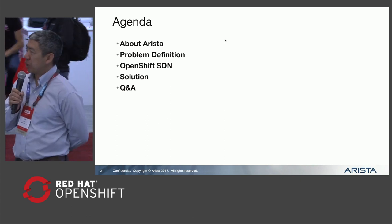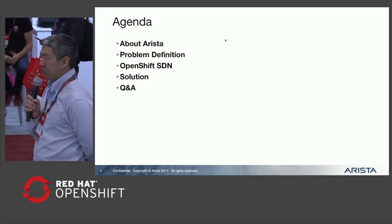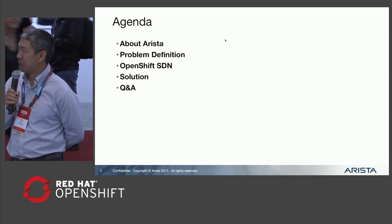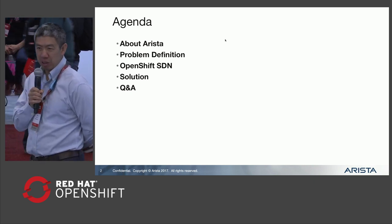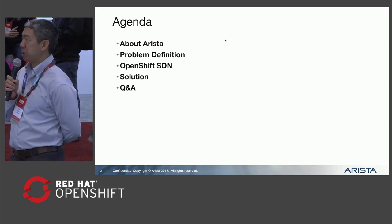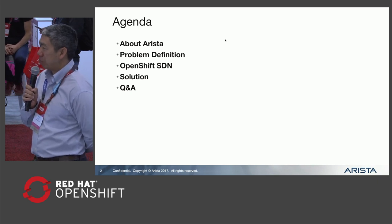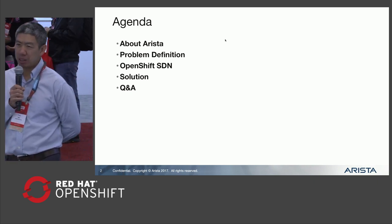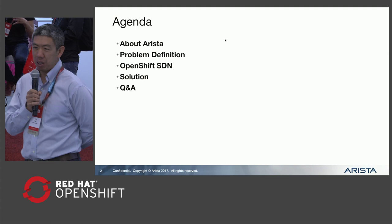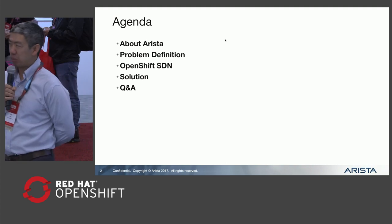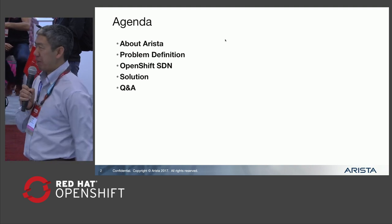So our agenda: we're just going to quickly go over Arista for those of you who may not be familiar with what Arista does. Then we'll go into the problem that we're trying to solve with OpenShift. We'll explain a little bit about what OpenShift SDN looks like, and then we'll propose the solution for our problem with OpenShift, then open it up for Q&A after that.